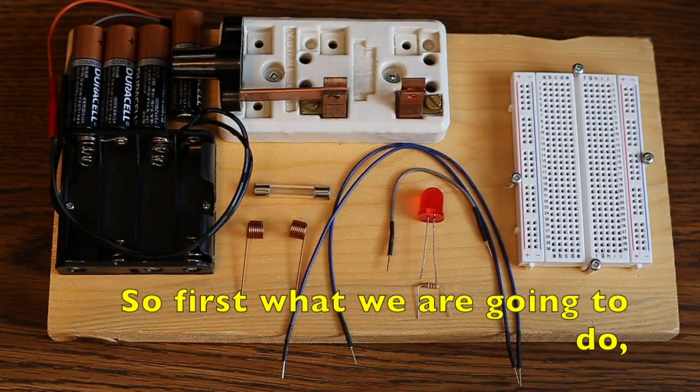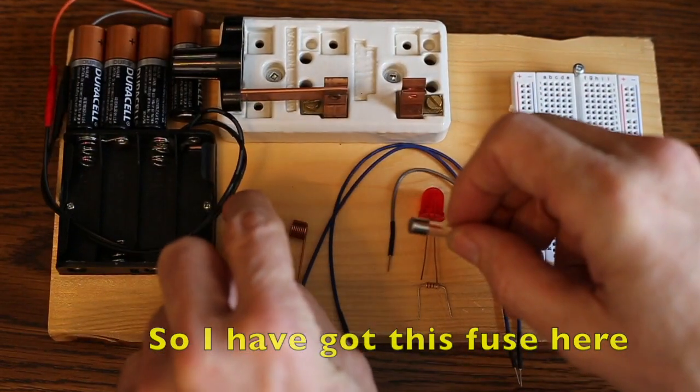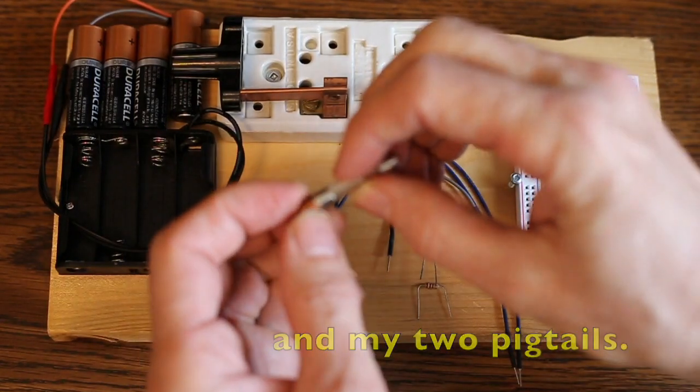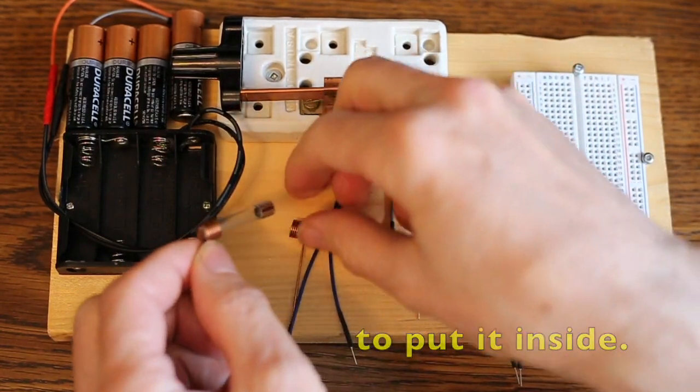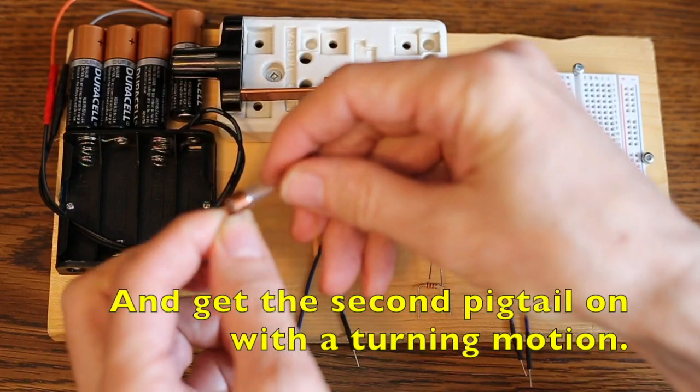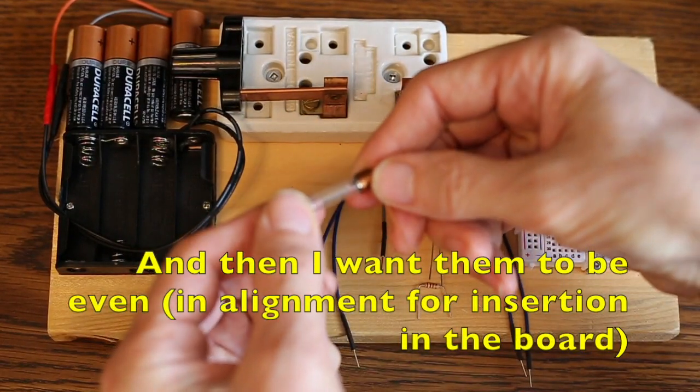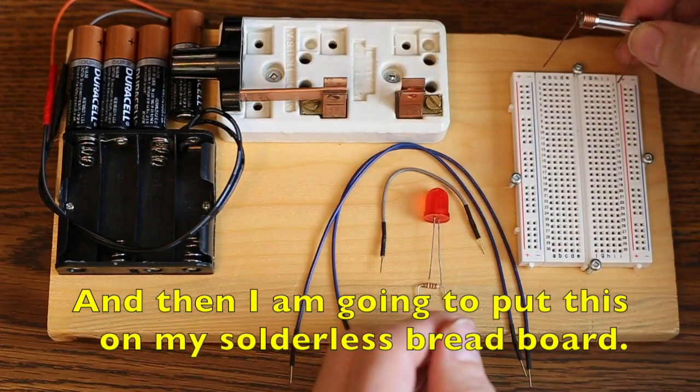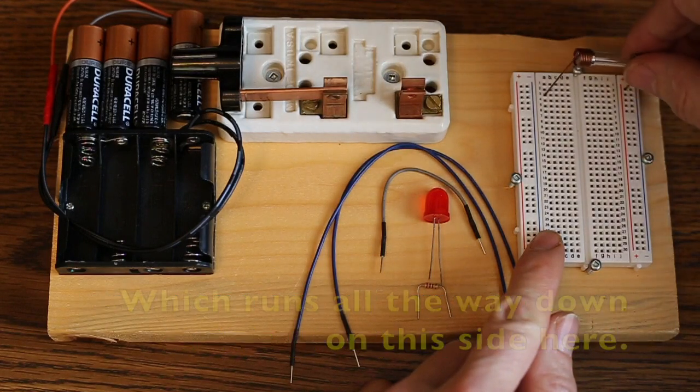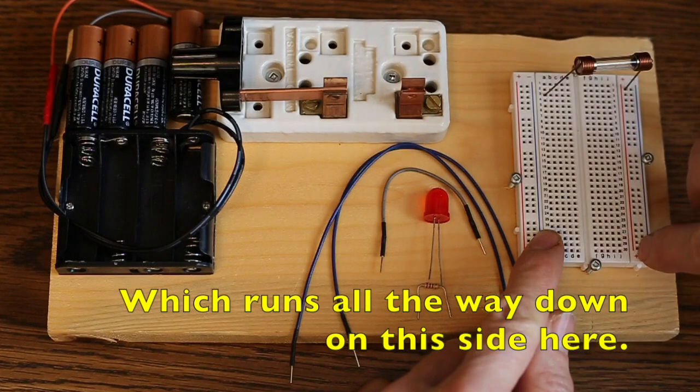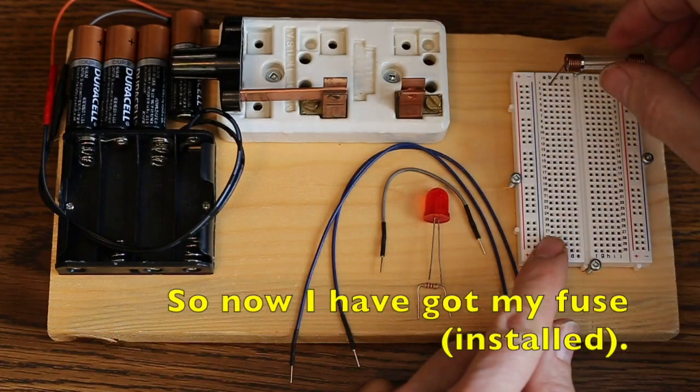First what we're going to do is we're going to install the fuse. So I've got this fuse here, and my two pigtails, so all I have to do is insert the fuse by giving it a turning motion to put it inside, and get the second pigtail, and with a turning motion. And then I want them to be even, and then I'm going to put this on my solderless breadboard. Now I want one end of my fuse to go to this plus terminal, which runs all the way down on this side here, and then the other one I'm going to put in my first row here.